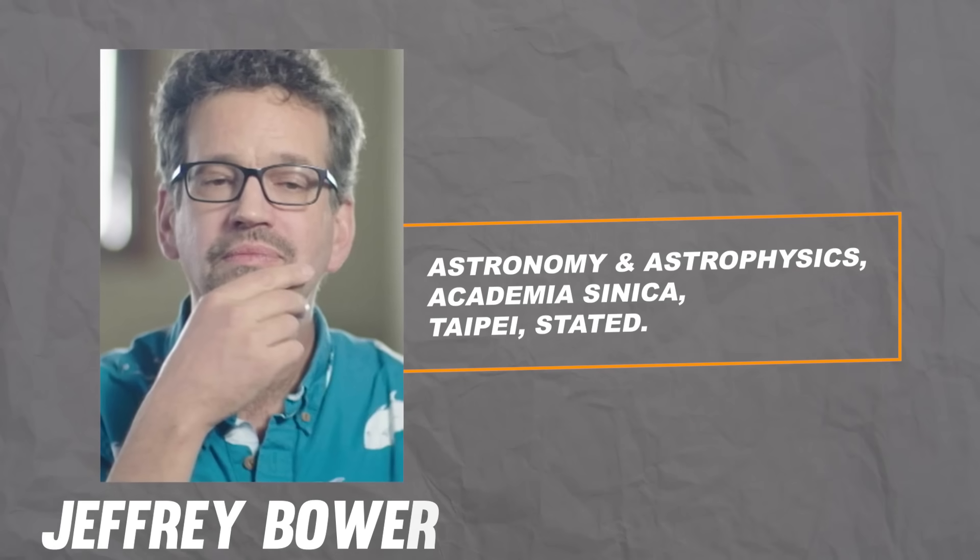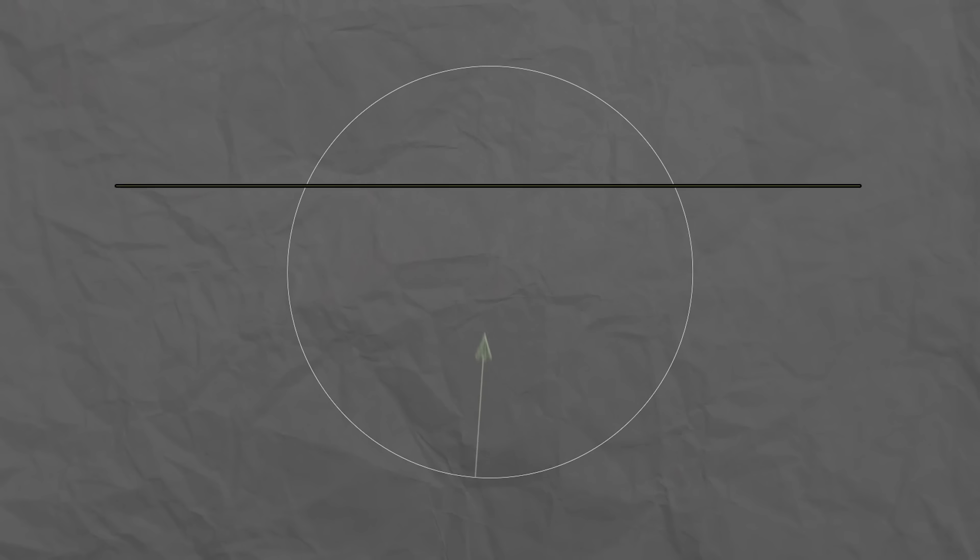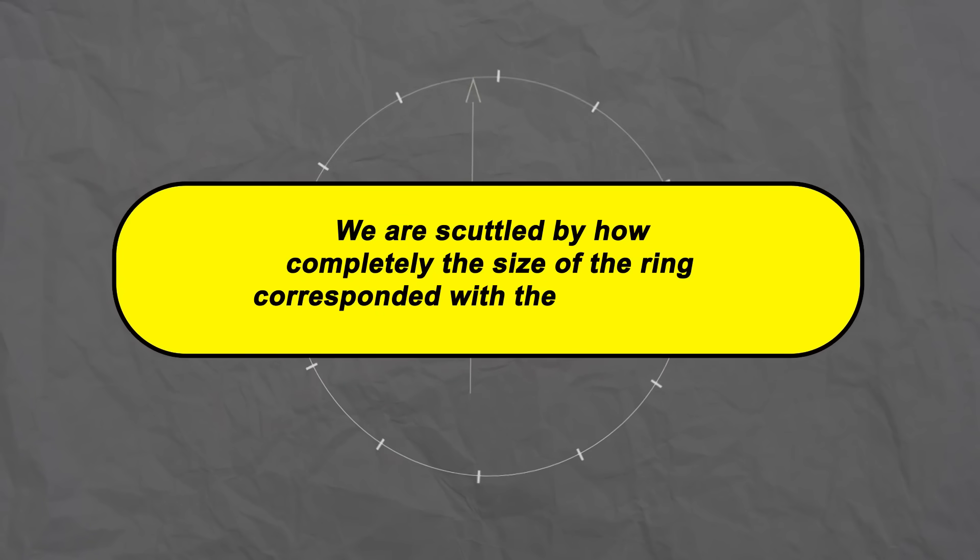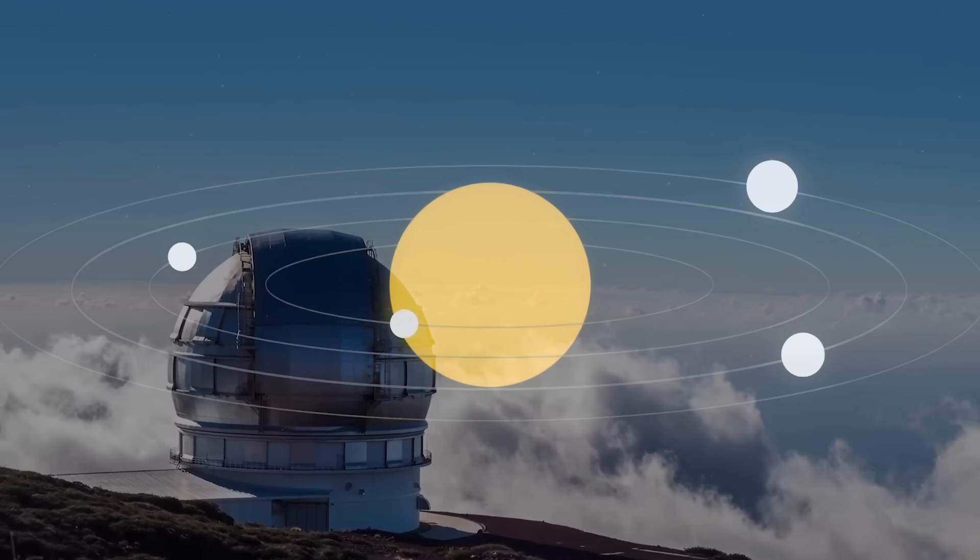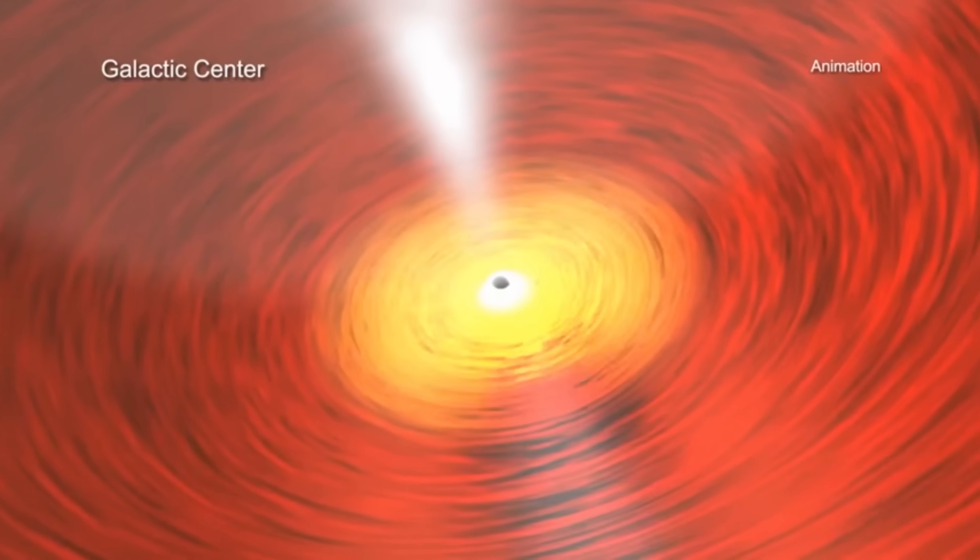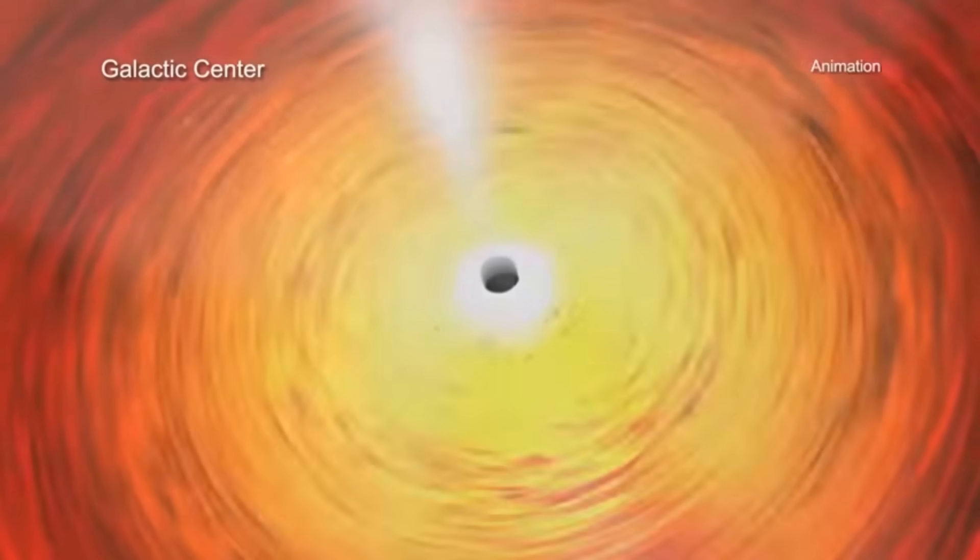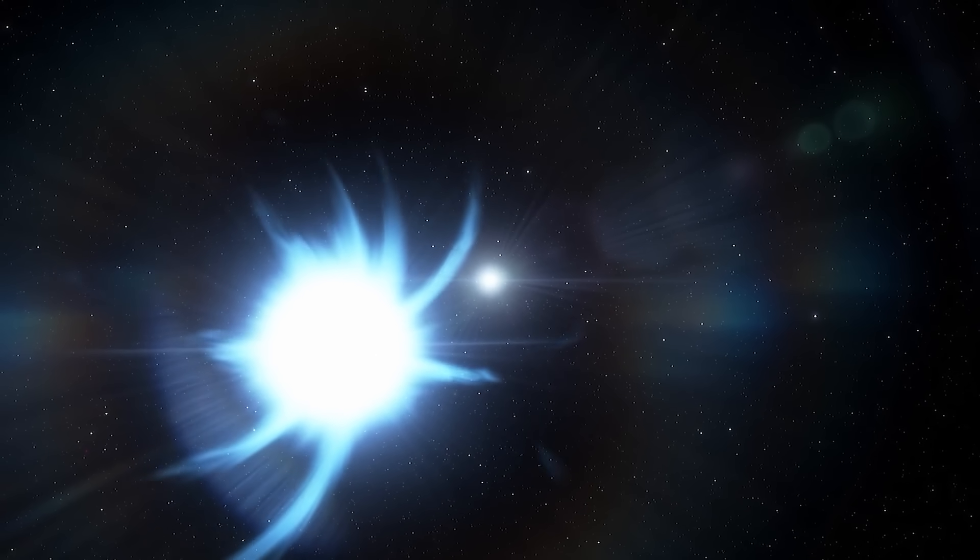Now that the EHT data have been thoroughly examined, several aspects of theoretical and computational models that explain how the glowing ring is produced have been confirmed. EHT project scientist Jeffrey Bauer of the Institute of Astronomy and Astrophysics, Academia Sinica, Taipei, stated, we were startled by how completely the size of the ring corresponded with expectations from Einstein's theory of general relativity. These groundbreaking findings have significantly increased our understanding of what occurs at the galactic centre and have revealed fresh information about how these enormous black holes interact with their environment.